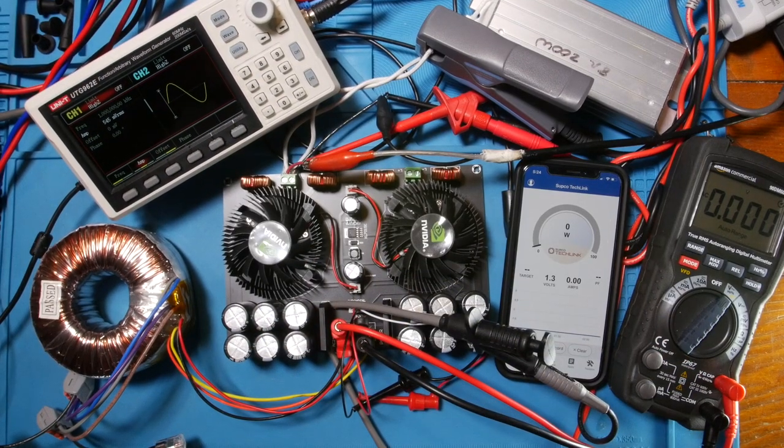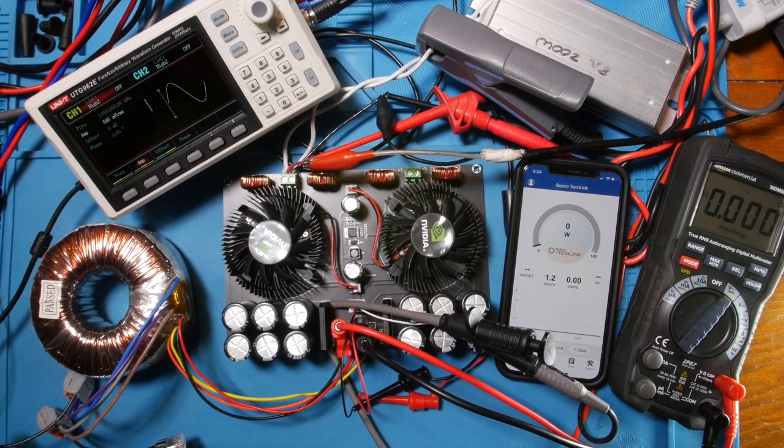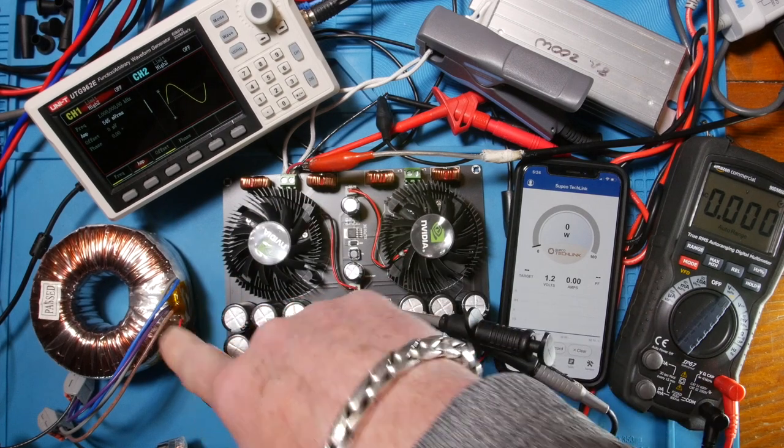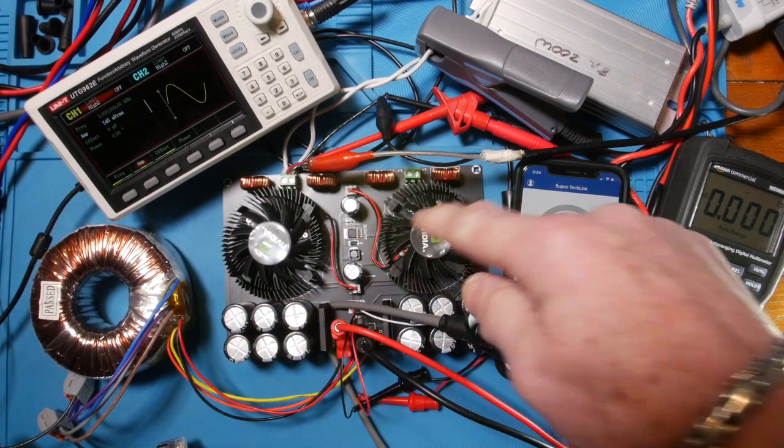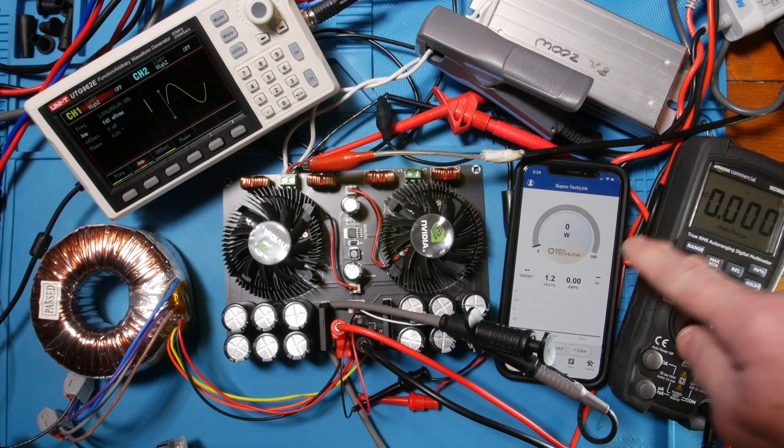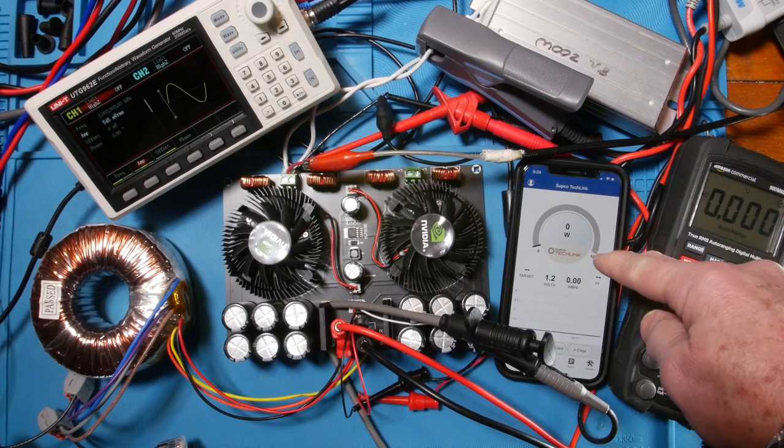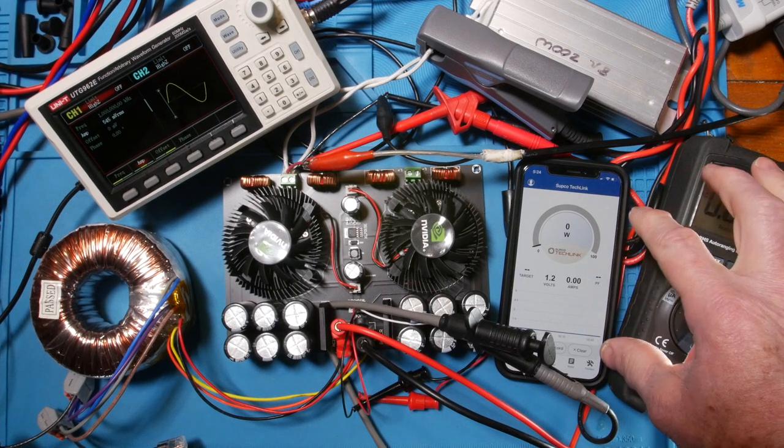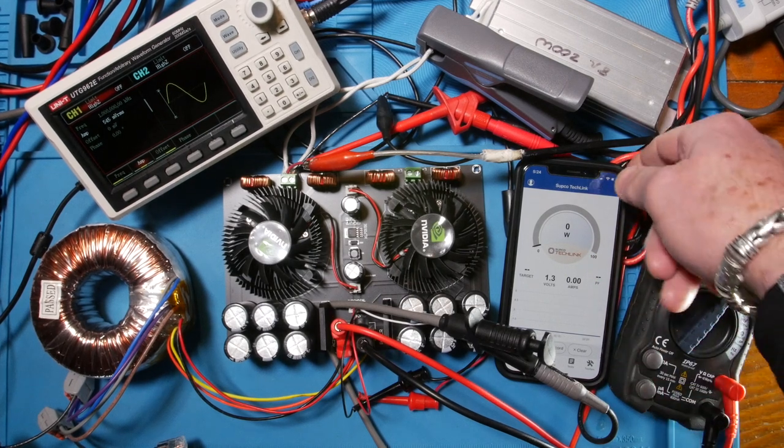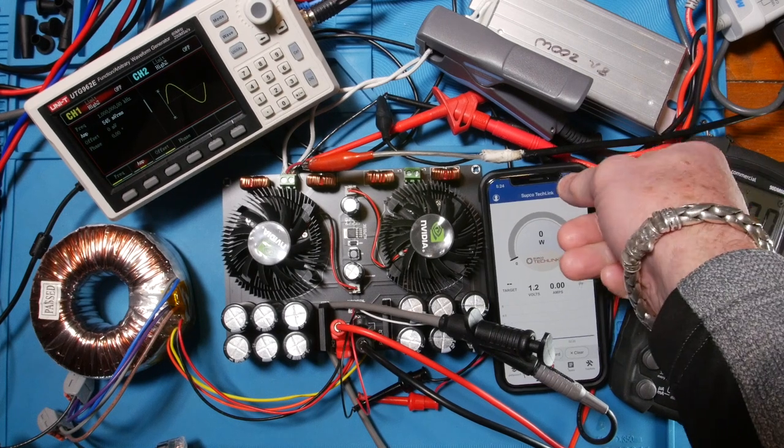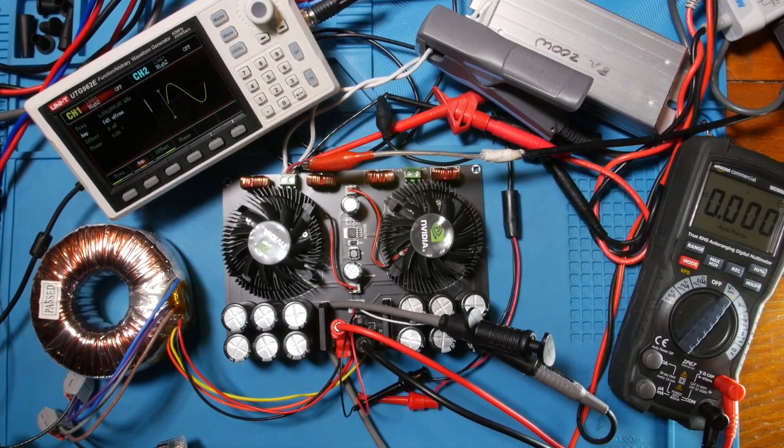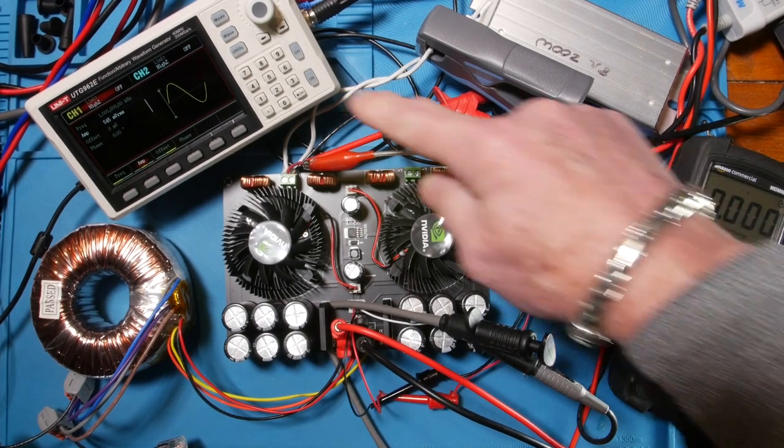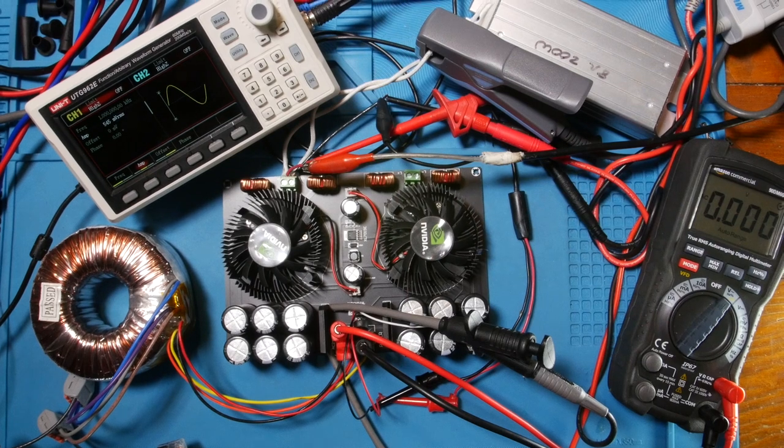All right, guys. So, this is the setup. Let me just show you real quickly around the bench here. The toroid transformer right here, powering up the amplifier. Now, my phone is sitting down here. And it's tied Bluetooth into a power meter. I'll show you that in a moment. So, here, I'm going to move this out of the way so you can see underneath. And, right here, this is our input signal coming from our generator here. Okay?